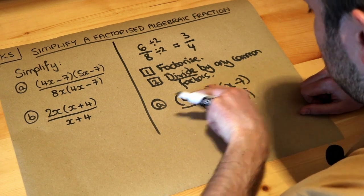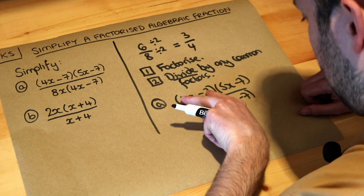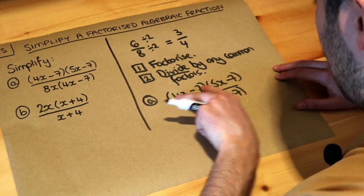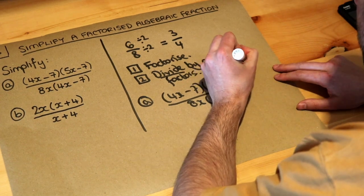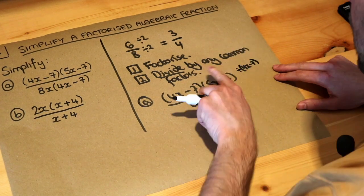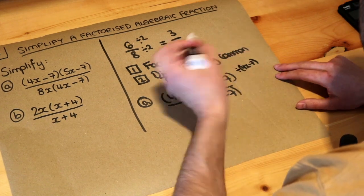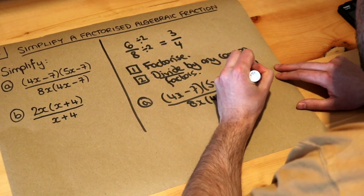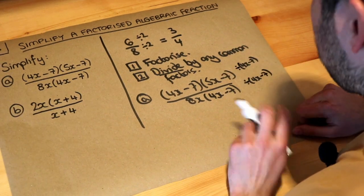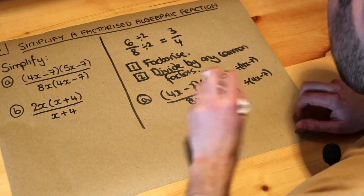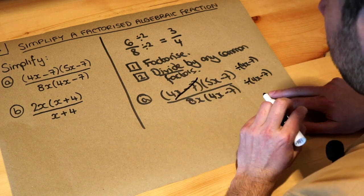Well, out of these two things you're timesing together, these factors, you've got 4x minus 7 at the top and in the denominator as well. So we could divide the top and the bottom by 4x - 7, because remember we can only simplify fractions by dividing, not by subtracting. Now I wouldn't usually write this aside, but it's just to illustrate what I'm doing. So when you divide by this 4x - 7, you can effectively cross it out.